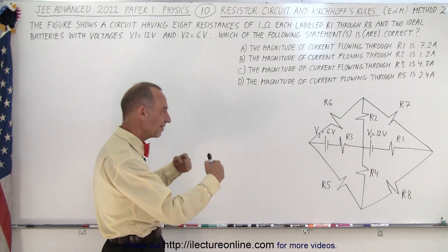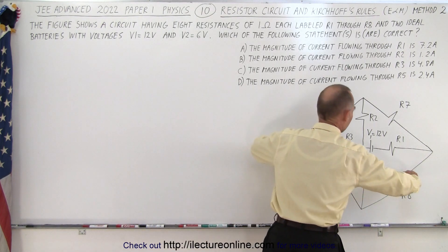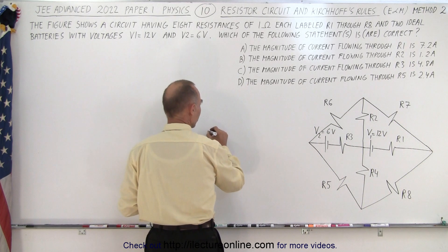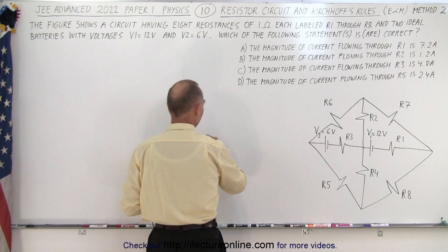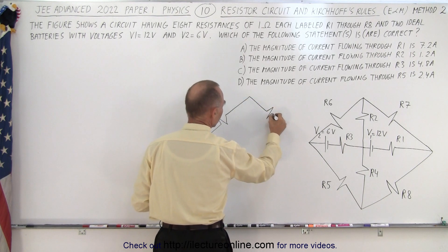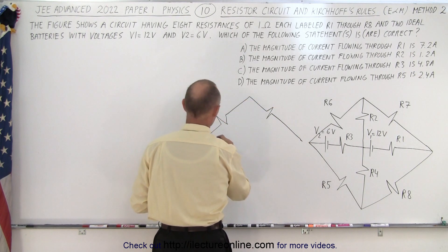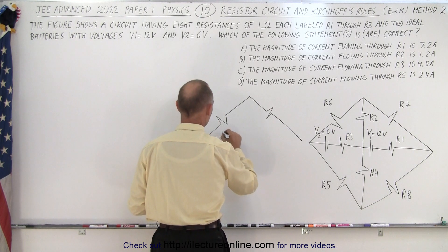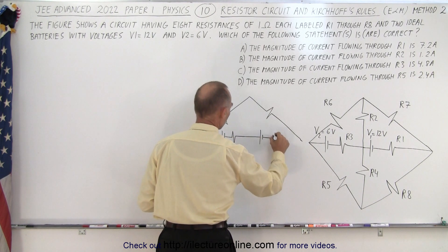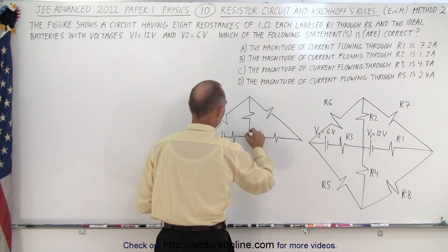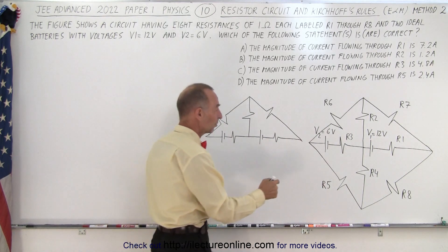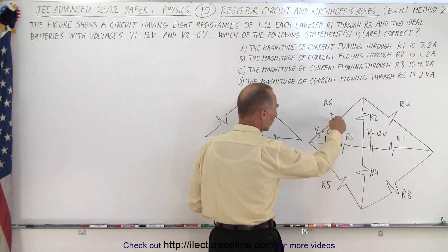Since we see a symmetry in the circuit, what we could do is simply take the circuit and fold it onto itself. When we do that, we get a simplified circuit with one resistor here, one resistor there, and the two batteries each with one resistor.